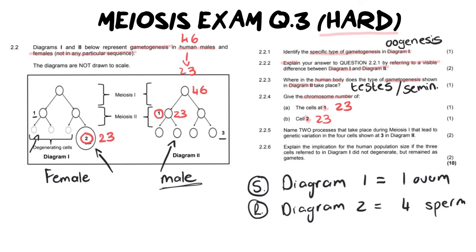Question 2.2.5: Name two processes that take place during meiosis one that lead to genetic variation in the four cells shown at diagram two or at three. So they want to know two processes that happen in meiosis one. I can think of two off the top of my head and you should be able to recall these very quickly. They are going to be crossing over which remember is when the two homologous pairs touch one another and they exchange genes. And number two is random arrangement which of course is the random way in which maternal and paternal chromosomes line on the equator. You don't know if you're going to get the maternal one or the paternal one.